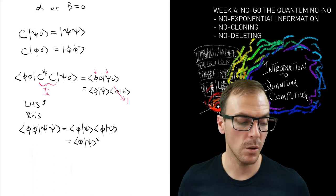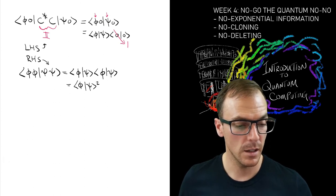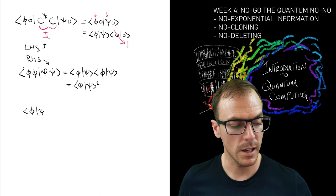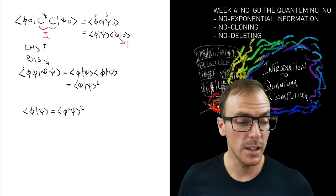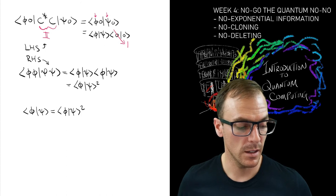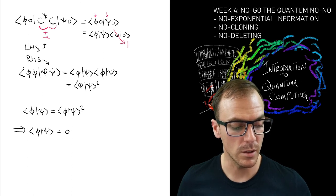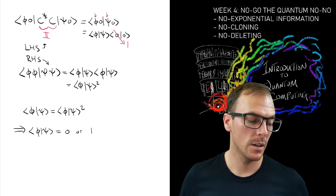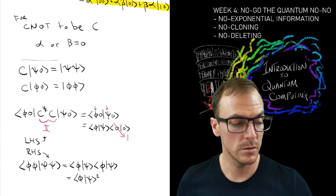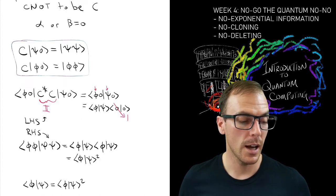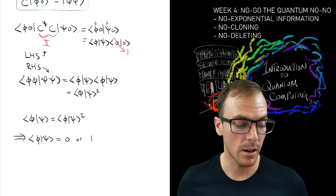So for these two equations to hold, what we need is the left-hand side to equal the right-hand side, or ⟨φ|ψ⟩ to equal ⟨φ|ψ⟩². That can only be satisfied if this inner product is equal to zero or one. So I can satisfy these equations, no problem.